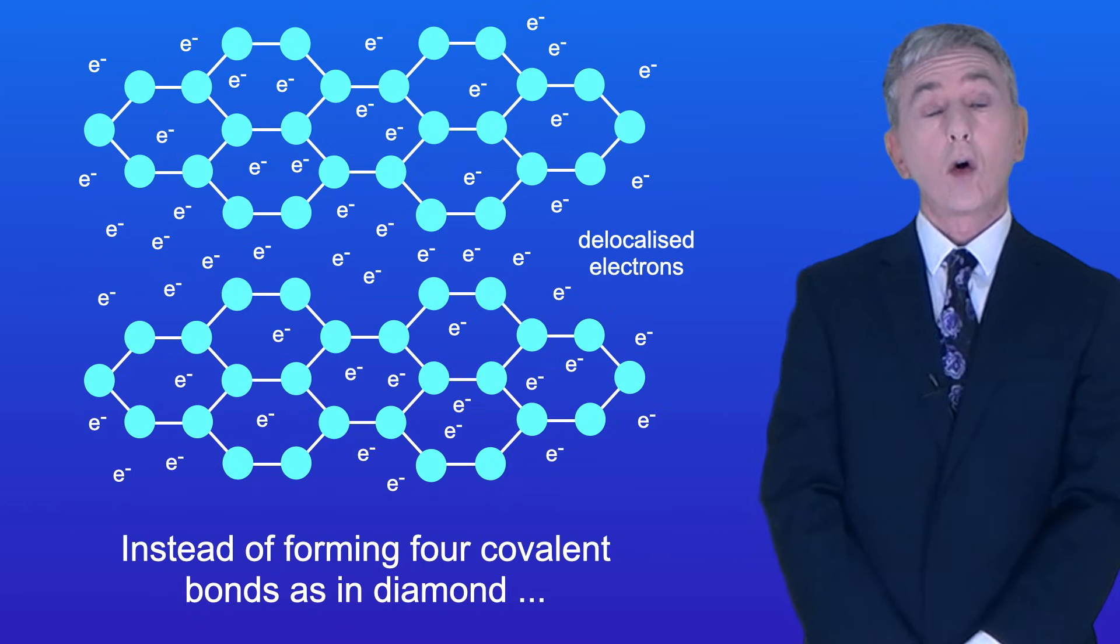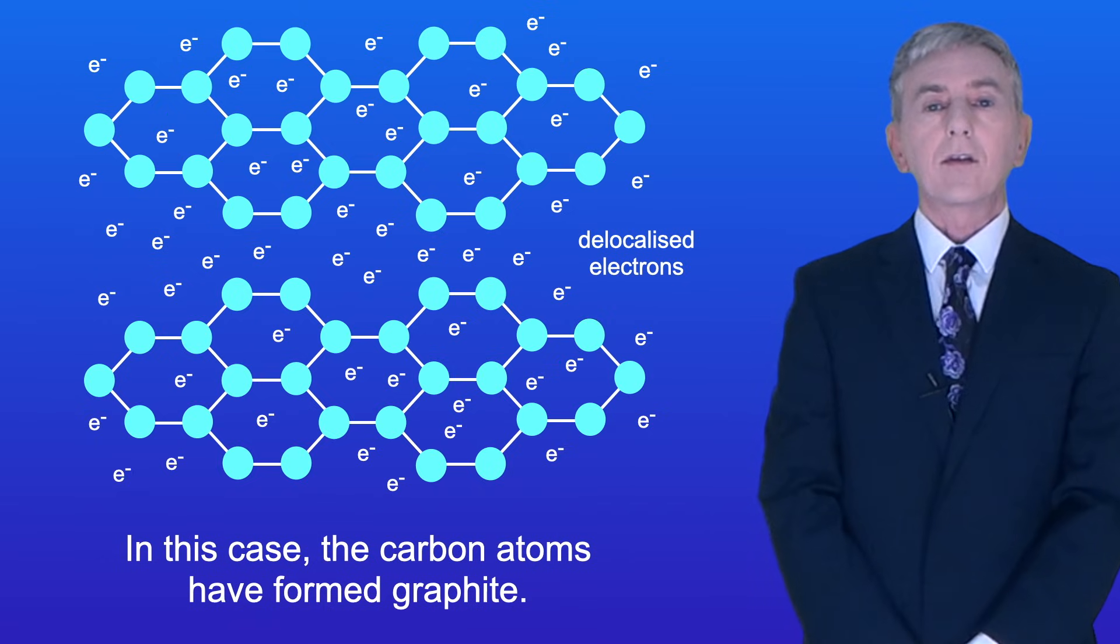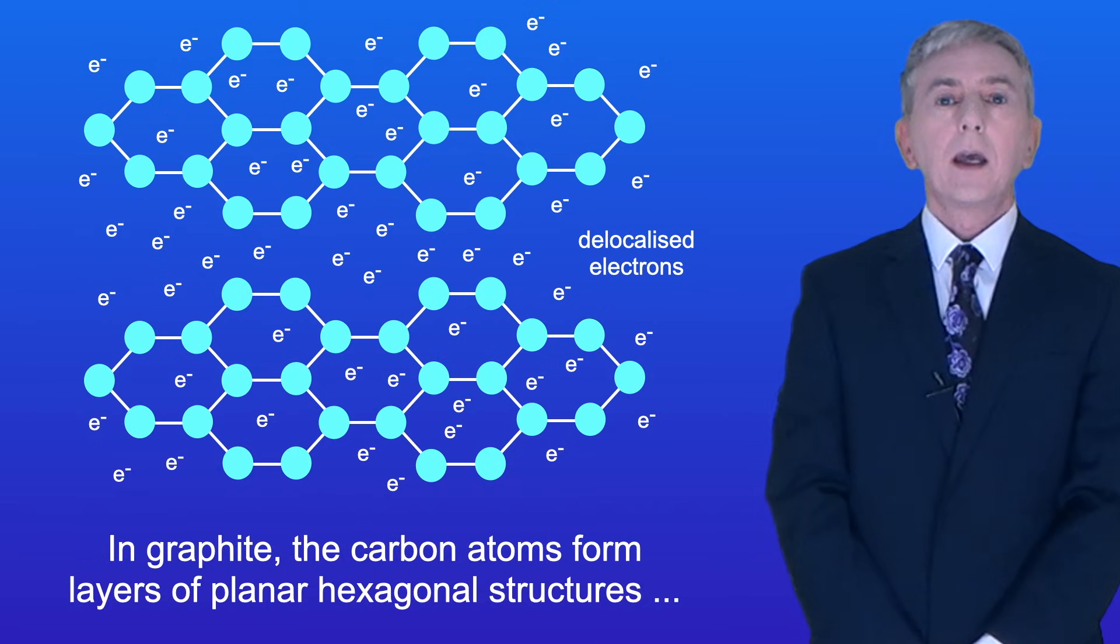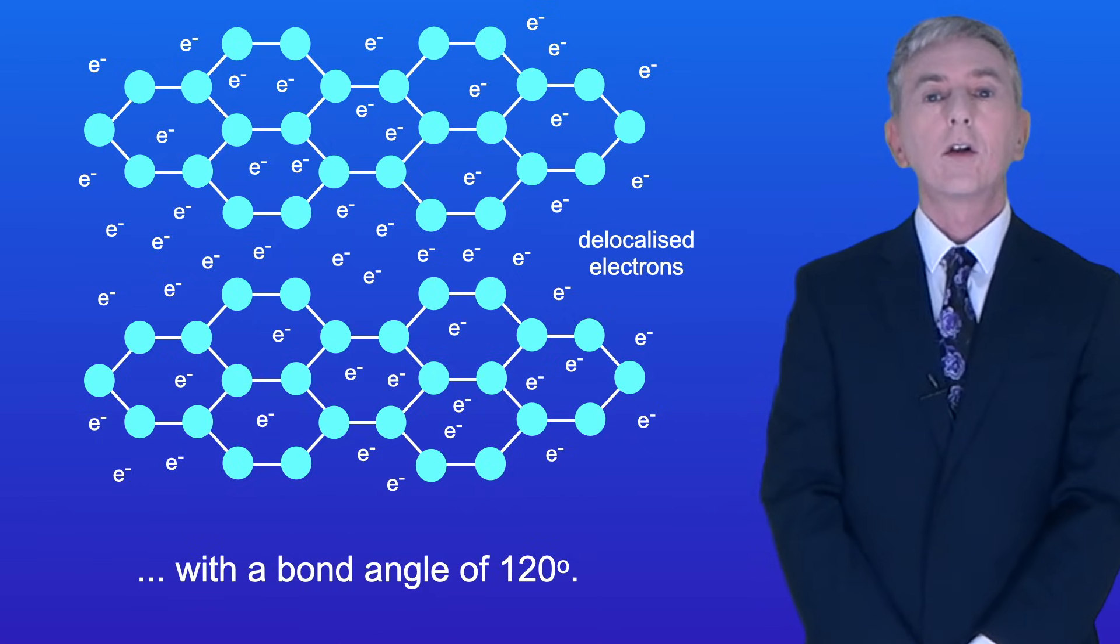Now instead of forming four covalent bonds, as in diamond, carbon atoms can form three covalent bonds and in this case the carbon atoms have formed graphite. In graphite, the carbon atoms form layers of planar hexagonal structures with a bond angle of 120 degrees.